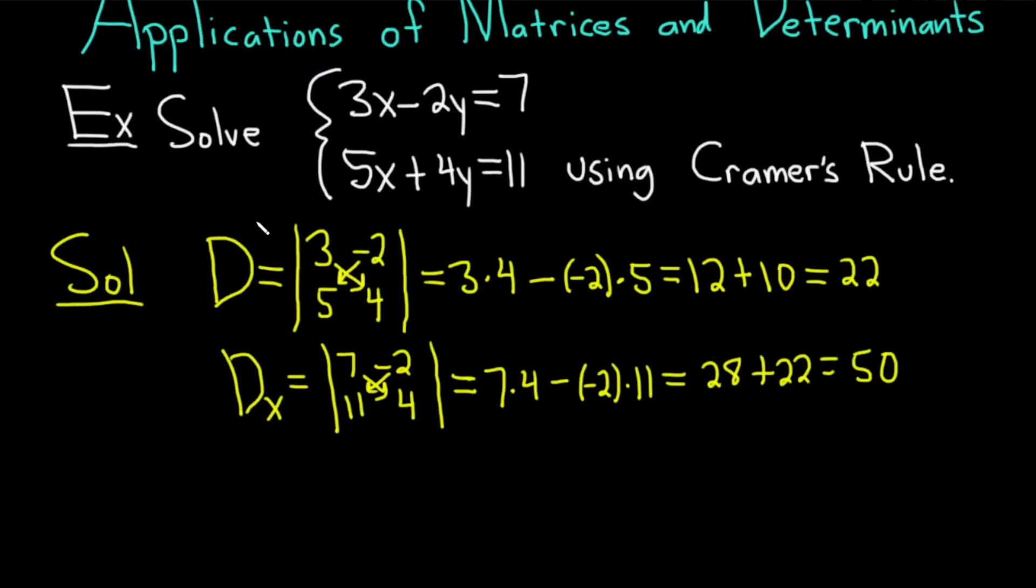Now we have to compute big D sub y. This is equal to the determinant of... And again, this time you keep the x's. And because it's big D sub y, you basically cross out the y's and replace them with 7 and 11. So I'm going to go ahead and write 7 and the 11. So again, for big D sub y, because it's big D sub y, you cross out the y's, and then you put the 7 and the 11 in the second column.